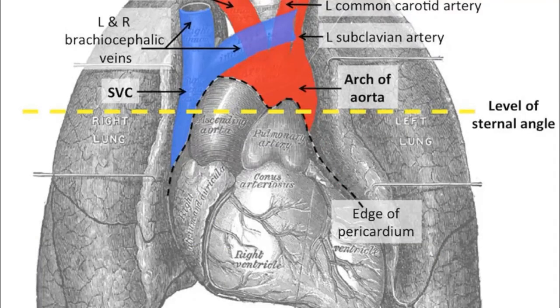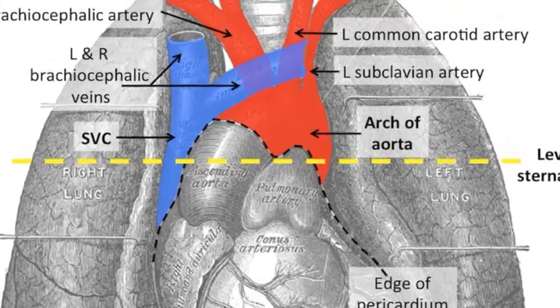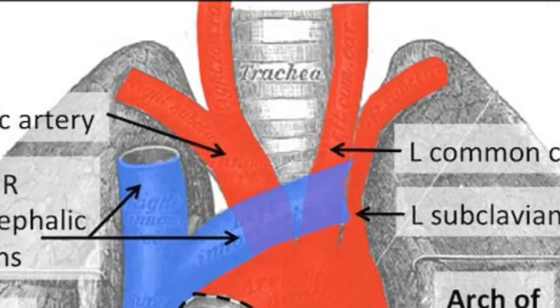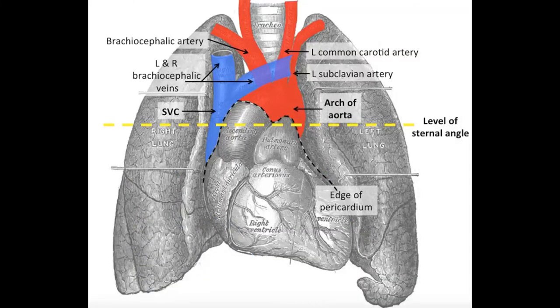Other contents of the superior mediastinum, apart from the VANs: you have 2 tubes, which are the trachea and the esophagus. You have 1 gland which is the thymus, and then 1 duct which is the thoracic duct.